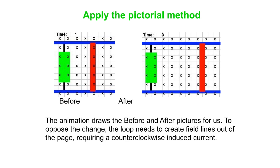And so to oppose the change, the change has been adding field lines into the page. To oppose that change, the loop wants to add its own field lines out of the page. So if I point my thumb on my right hand out of the page the way the induced field is, then my fingers curl counterclockwise. So the counterclockwise current around the loop generates this opposing field to oppose the change in flux.